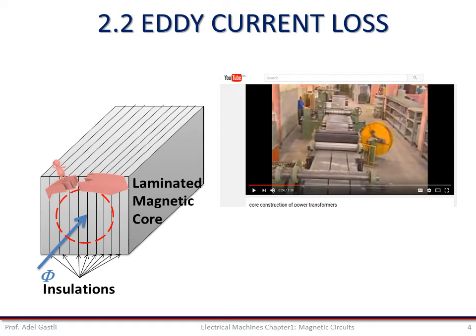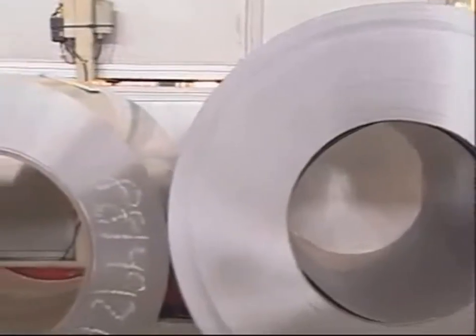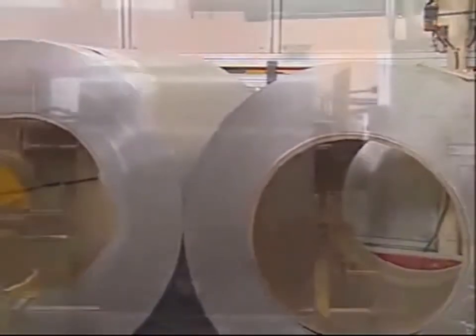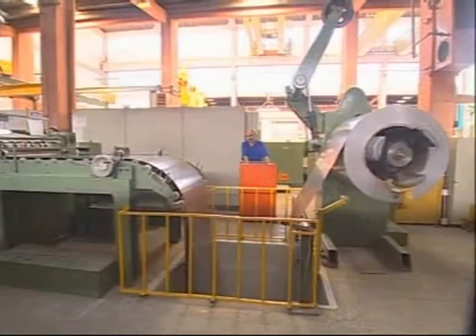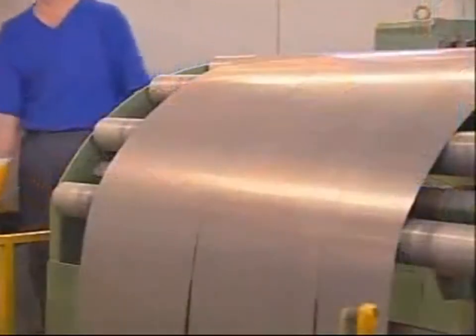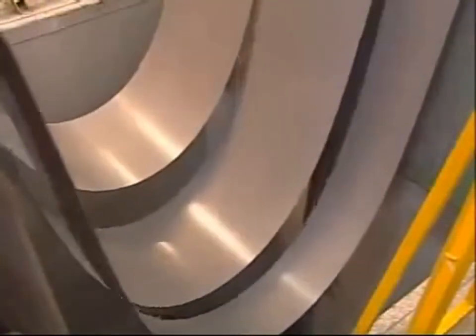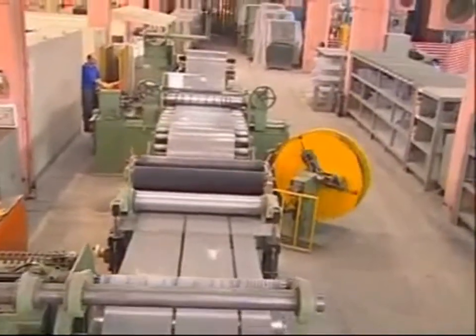The following movie shows how a laminated core of a power transformer is made. In best transformers, cold rolled, grain oriented electrical steel sheets are used in accordance with DIN 46400 norms. Forming three limbs, lower and upper yokes on a plate, the magnetic core body is prepared. Both surfaces of the metal sheets have carlite insulation.